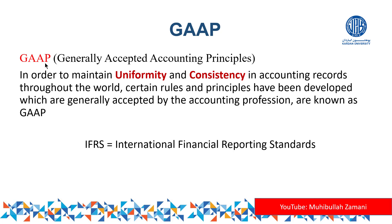GAAP was basically initially developed in the United States. But there is also another set of principles called IFRS — International Financial Reporting Standards — which was developed in the United Kingdom. So these two sets of rules are available in the world. In most cases they are the same, but in some cases there are slight variations, and they are working to reduce that gap. There are several standards within GAAP, and five fundamental examples are mentioned here.